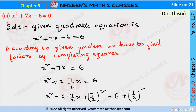Now we solve the third quadratic equation: x² + 7x - 6 = 0, by the completing the square method. The first step is to transpose the constant term -6 from LHS to RHS, giving x² + 7x = 6.